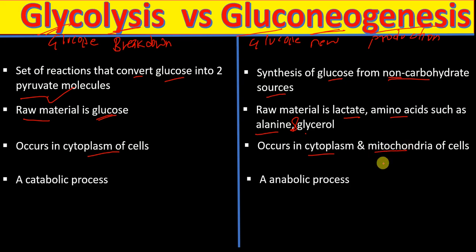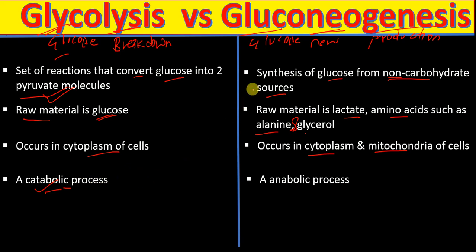Glycolysis is a catabolic process because glucose is broken down into pyruvate molecules. In a catabolic process, a molecule is broken down into another molecule. Gluconeogenesis, on the other hand, is an anabolic process, meaning there is synthesis of a molecule — in this case, synthesis of glucose.